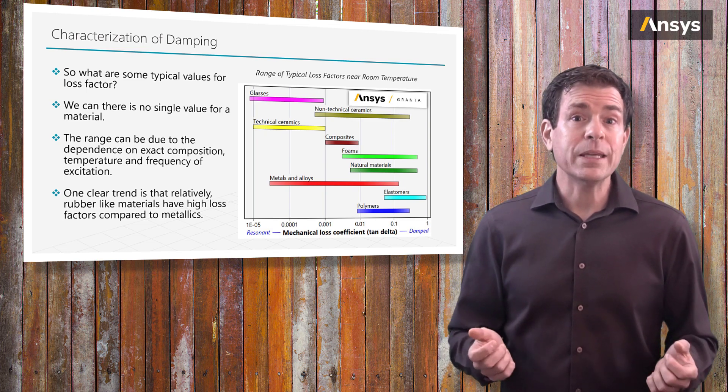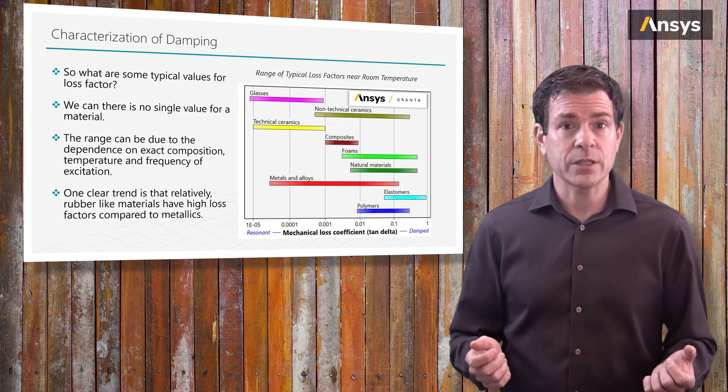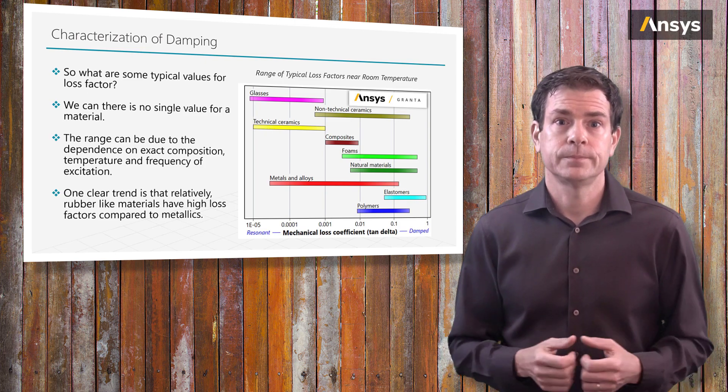An example could be a car tire that is cold will not absorb vibration as well as one that's warmed up. In the study of dynamics, there are still other ways to characterize damping, and one method is called Rayleigh damping.